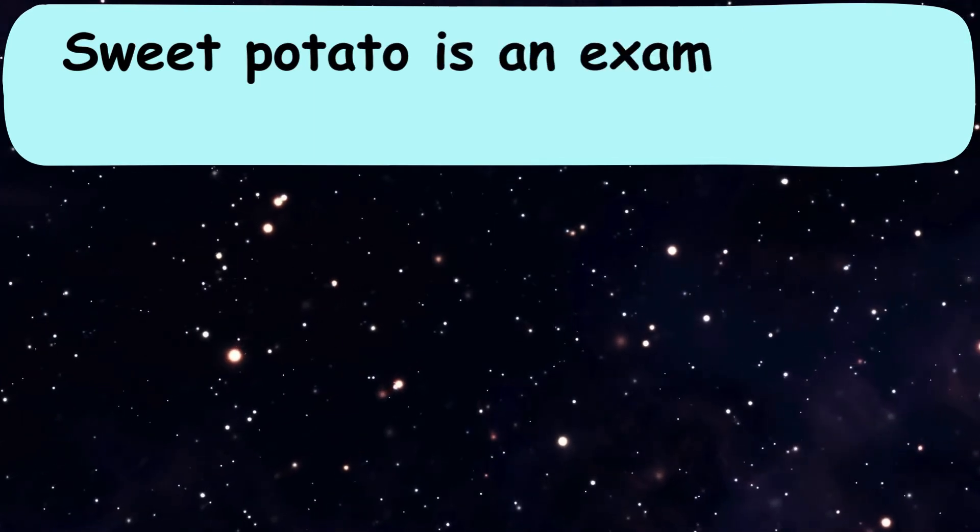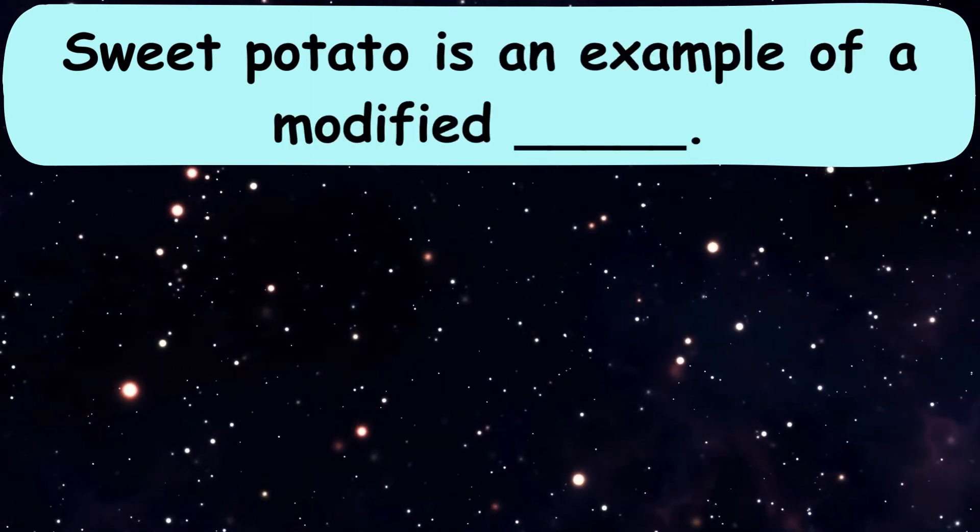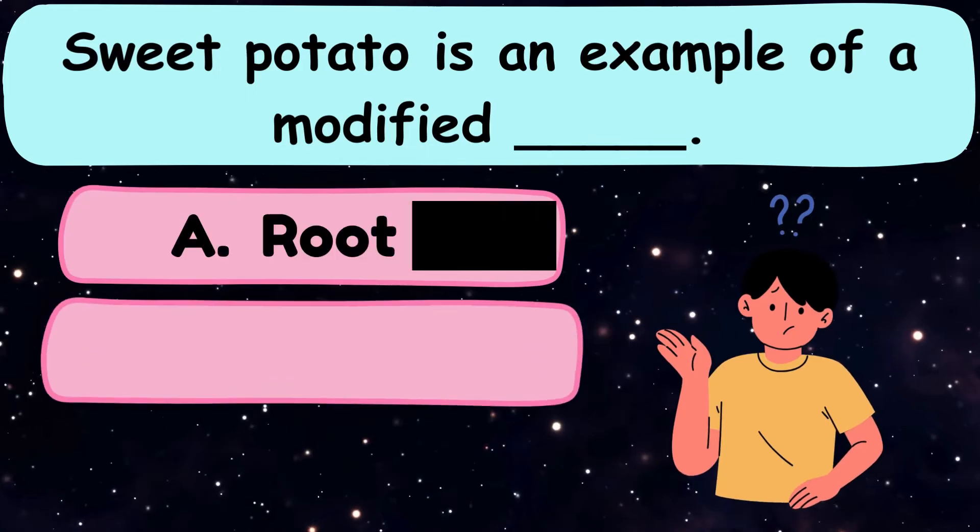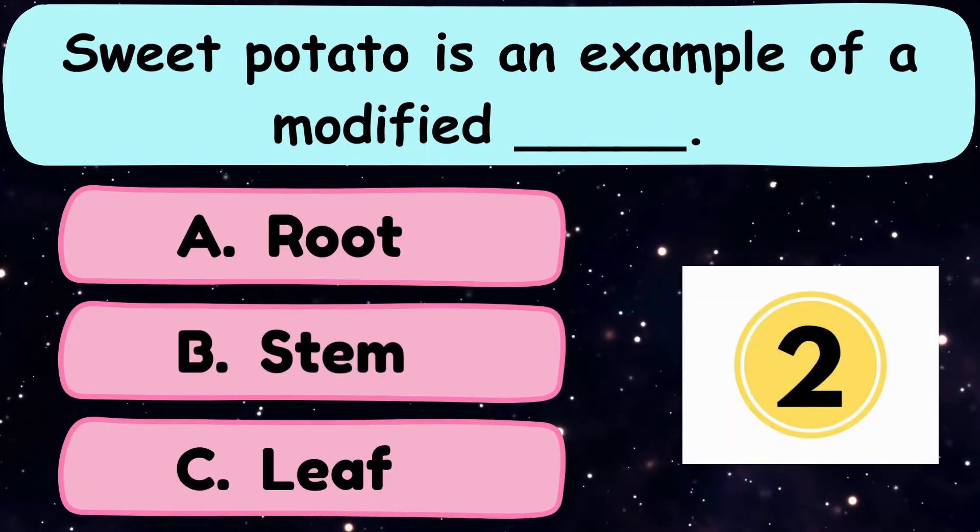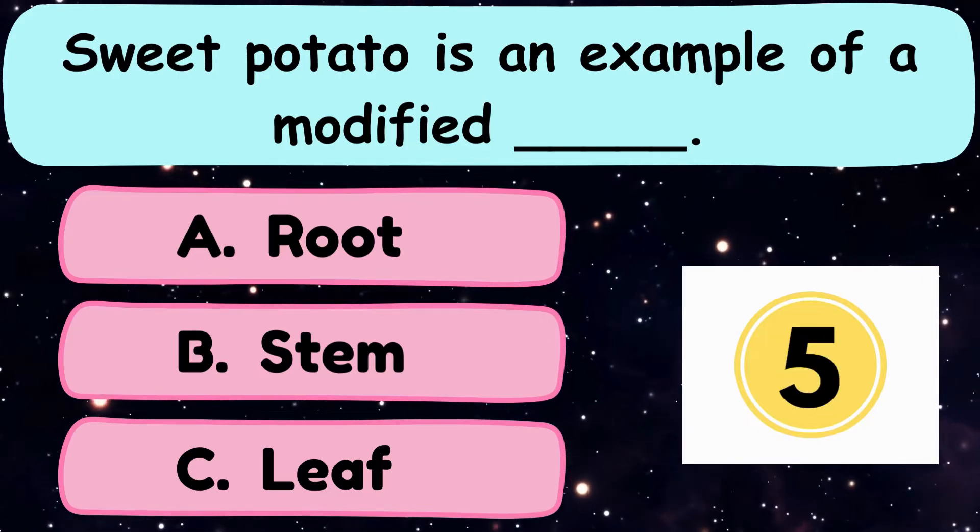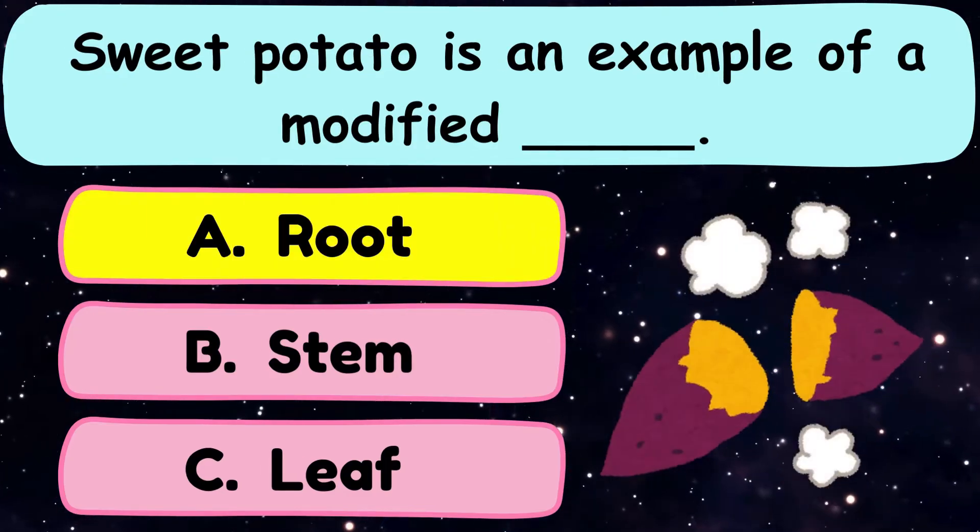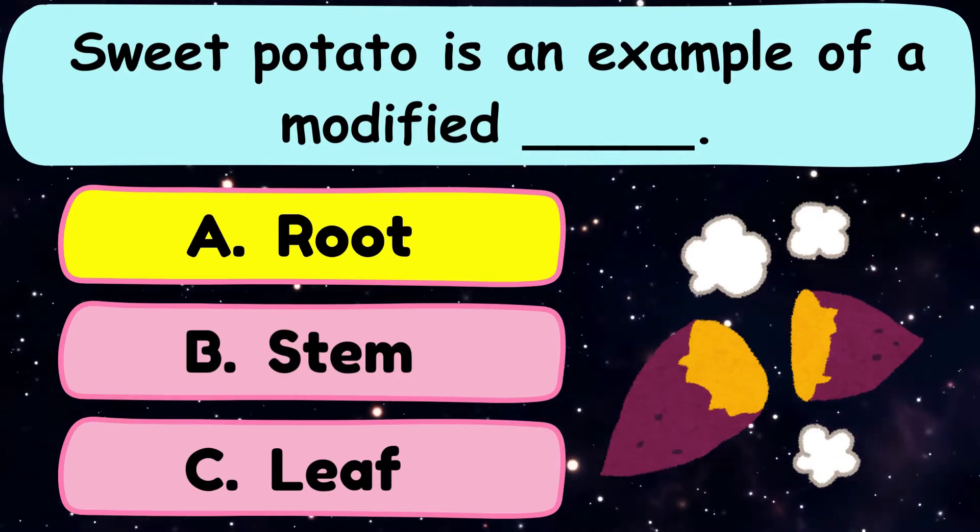Question number 15. Sweet potato is an example of a modified dash. A. Root, B. Stem, or C. Leaf? And the correct answer is option A. Root.